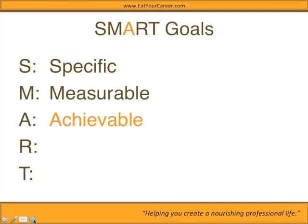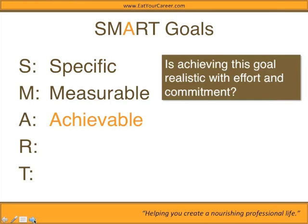A is for Achievable. Don't create a goal that feels impossible. It can feel like a stretch and should feel challenging and a little difficult — but not impossible. You have to have the ability to make it happen. That's one reason I chose a half marathon. A full marathon, 26-point-something miles, doesn't feel possible for me right now since I can barely run at all. It wouldn't feel achievable. Ask yourself: Is achieving this goal realistic with effort and commitment? It should feel like: 'I can do this — it's going to be hard, but I can do it.'